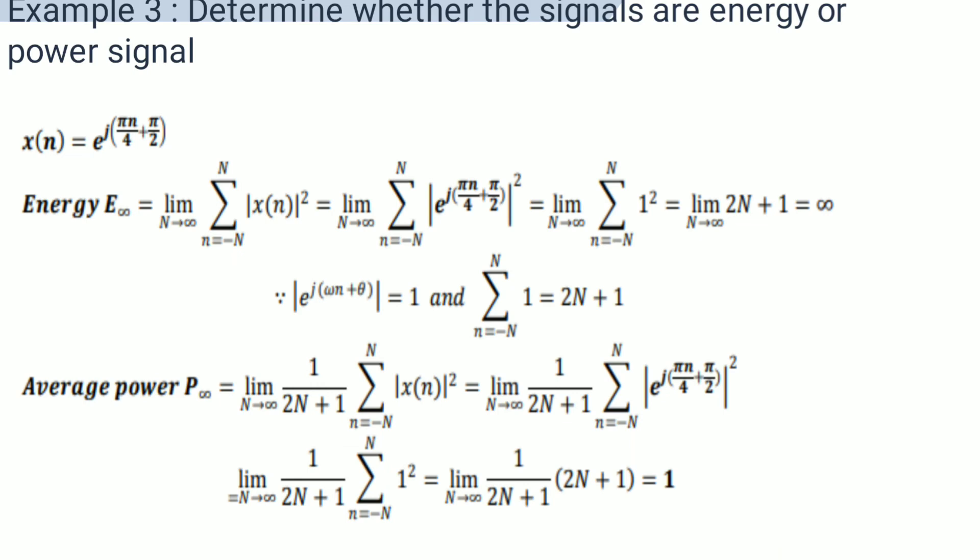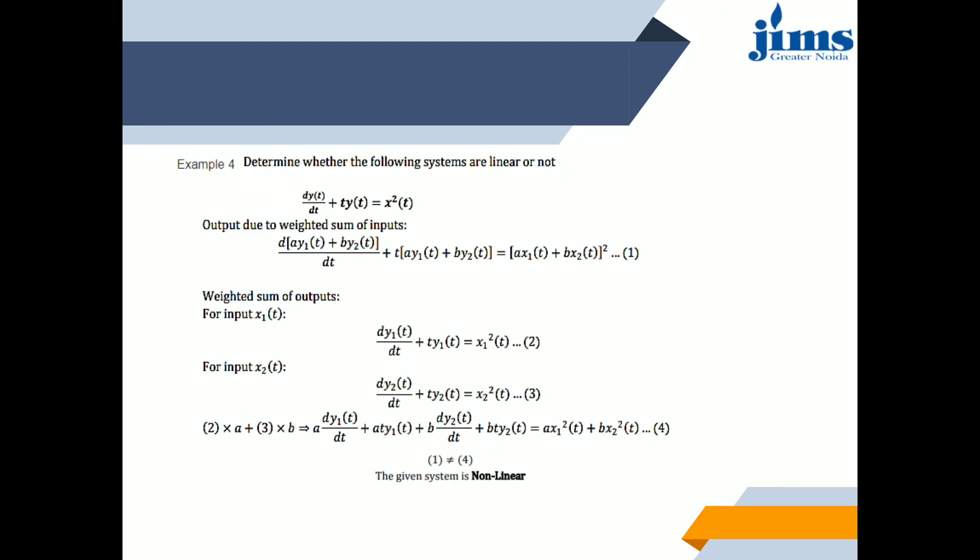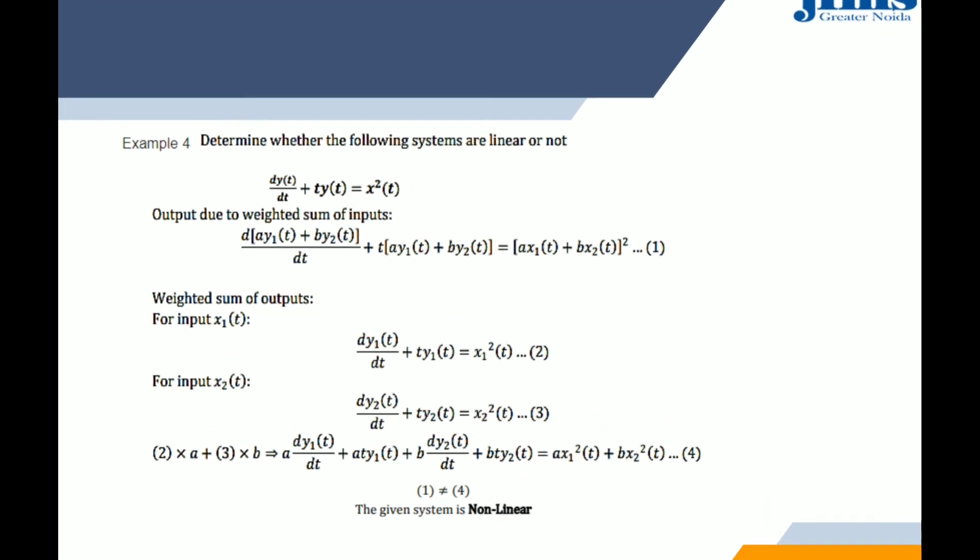The average power P∞ = limit as N→∞ of (1/(2N+1)) times the summation from -N to N of |x(n)|² = limit as N→∞ of (1/(2N+1)) times (2N+1) = 1. Since energy is infinite and average power equals 1, this is a power signal.